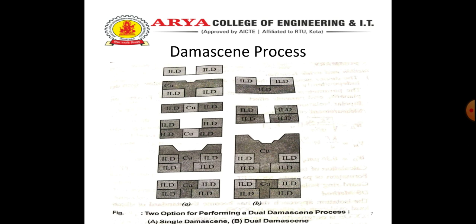Plating and ionized metal plasma PVD are preferred for the damascene process. For the plating process, a thin copper seed layer has to be deposited on top of the barrier metal to initiate plating. It has the problem of deposition uniformity. This concludes the discussion on single damascene and dual damascene processes. Thank you.